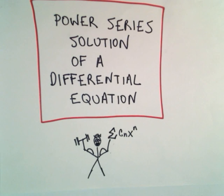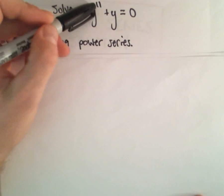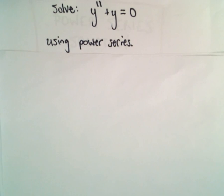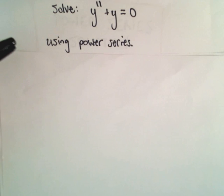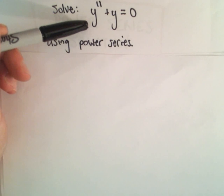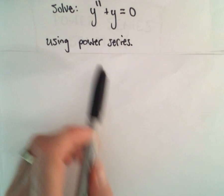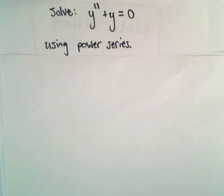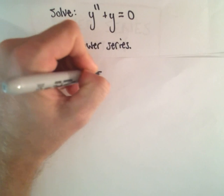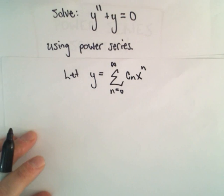In this video I'm going to look at finding a power series solution of a differential equation. We're going to solve y double prime plus y equals zero using a power series. Not all differential equations need a power series, but this is a basic example to illustrate the idea — especially for equations where there's no explicit technique. We assume a solution of the form y equals the sum from n equals zero to infinity of c sub n times x raised to the n.